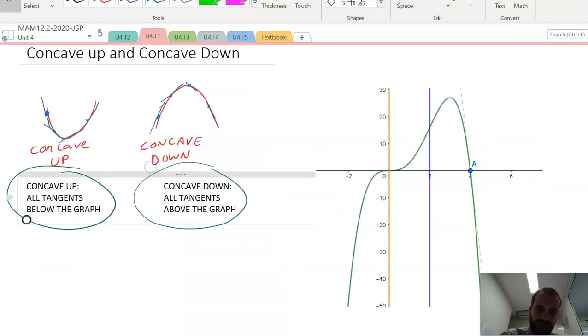So just summarizing all of that, from there backwards, from 0 to negative infinity, the tangent is above, so that means that this is concave down here.